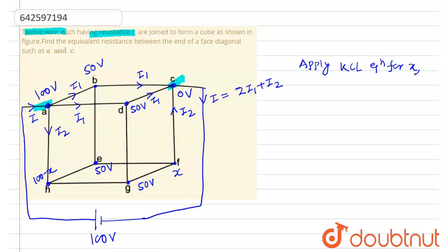We write (x - 0)/r + (x - 50)/r + (x - 50)/r = 0. From here we get 3x = 100, so x = 100/3 volts.